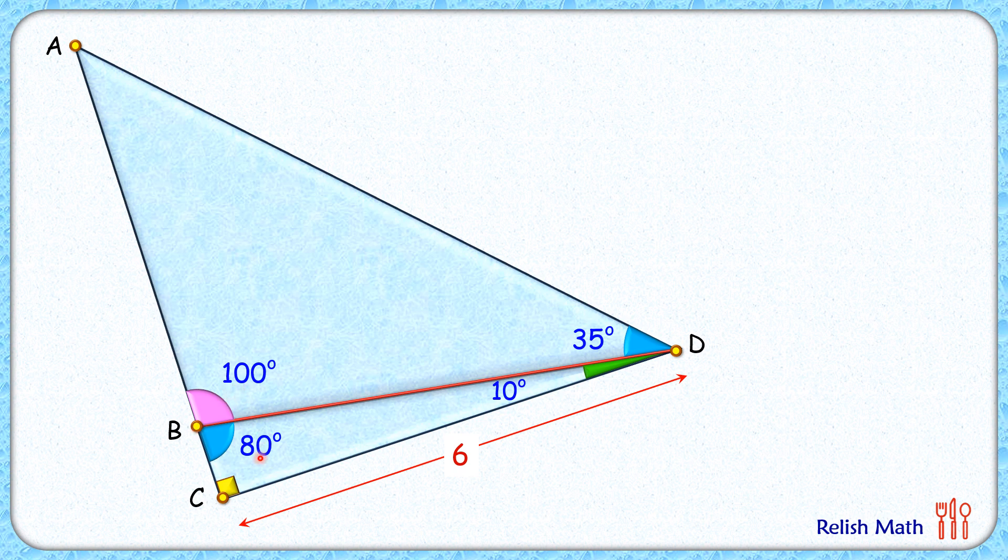So we have got here a triangle ACD which is a right angle triangle with this angle D as 45 degrees, and thus this remaining angle will also be 45 degrees. Or we can say this triangle is an isosceles right angle triangle.